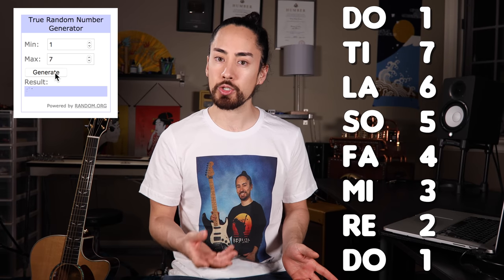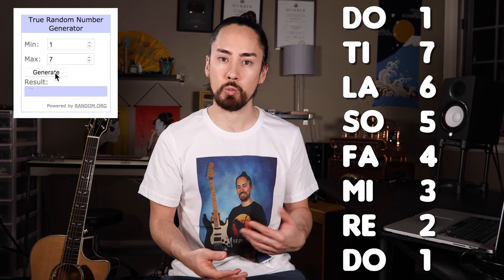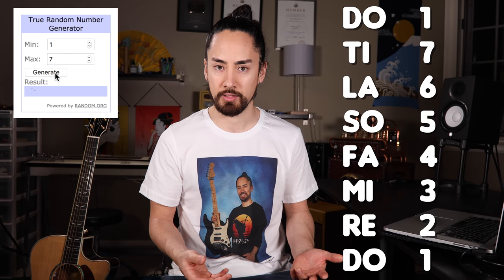Anyways, on to the music. The foundation for almost all the music we hear is the major scale: Do, Re, Mi, Fa, So, La, Ti, Do. There are seven different notes here — it repeats at the eighth. So what I'm going to do to create my melody is use a number generator to randomly pick a number between one and seven.